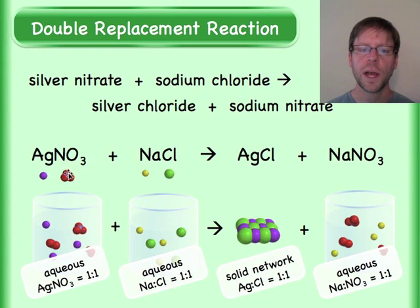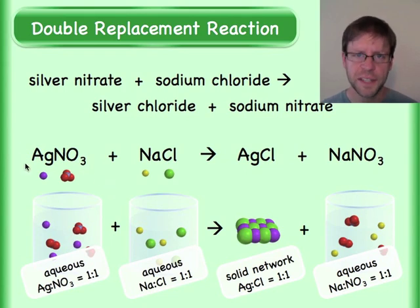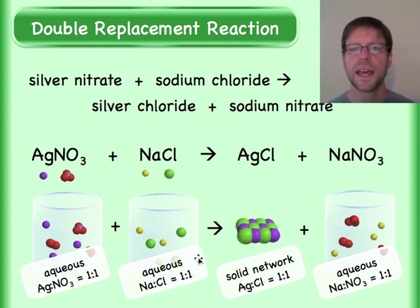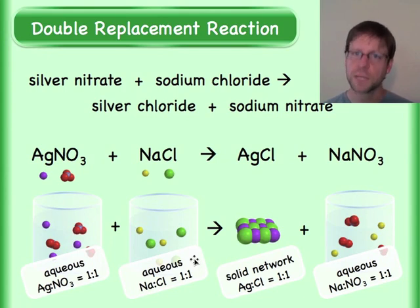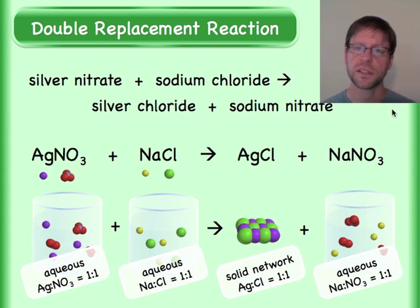I'm indicating what compounds I'm using for each ion so you can keep better track. Silver nitrate is very soluble and sodium chloride — table salt — is very soluble, so you put it into solution and you have this mixing of four different ions. Then two of those ions will find each other, bind to each other, form a solid, and precipitate out — that happens to be the silver and the chloride in this particular situation.